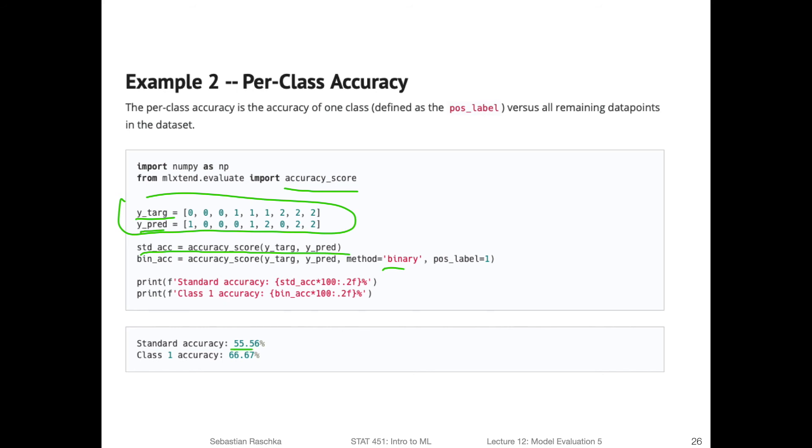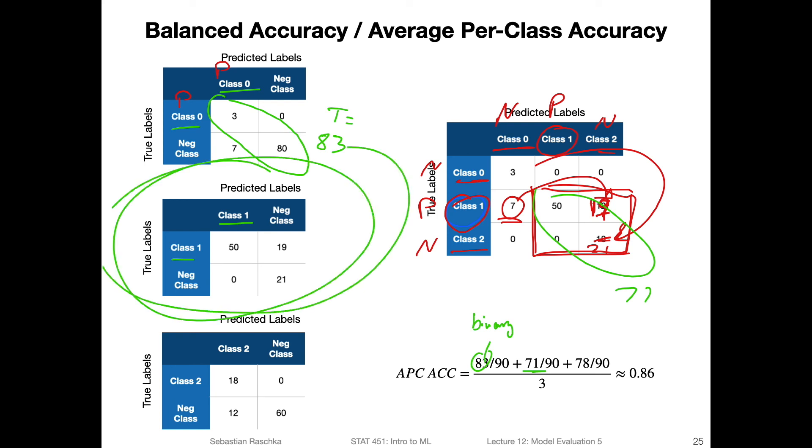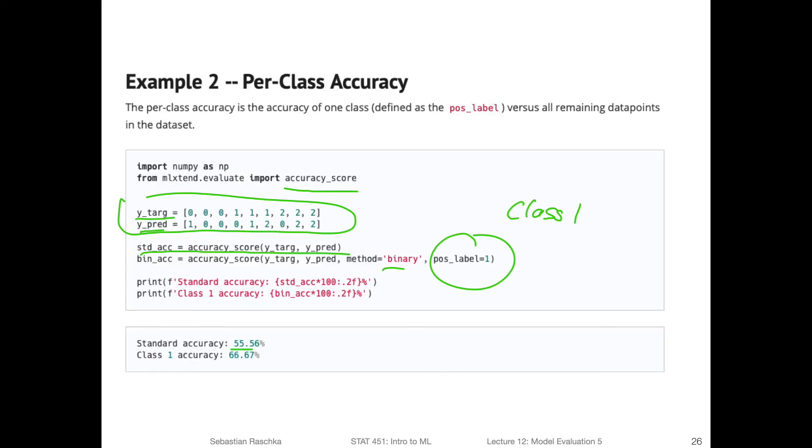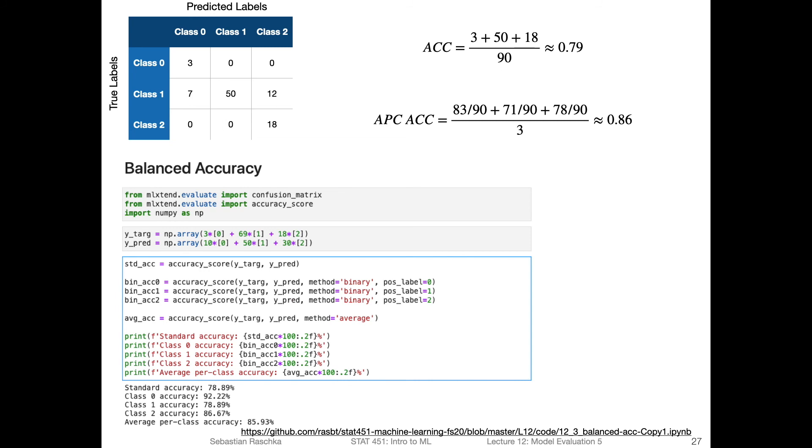And then we have three classes here. If I want to compute the binary classification accuracy for class one as the positive label, this would be then equivalent to this one, where class one is the positive label, and everything else is the negative class. You can specify it by specifying the method as binary, and the positive label as one, and you can do the same thing with zero and two. So this is what I've done here. This is the confusion matrix that I showed you two slides ago, here again, for reference, the accuracy and the average per-class accuracy.